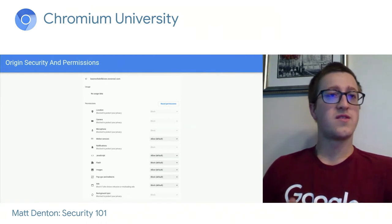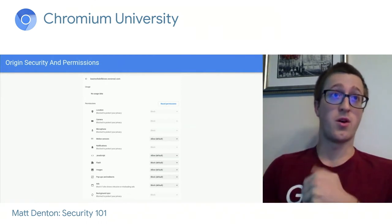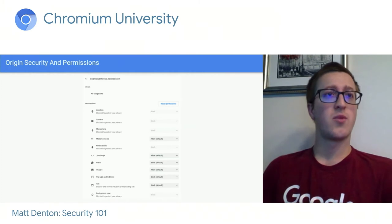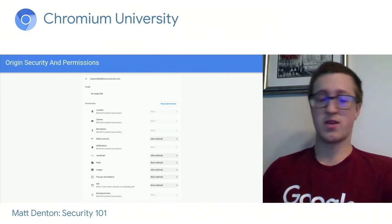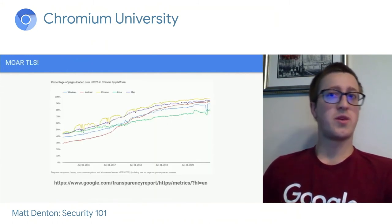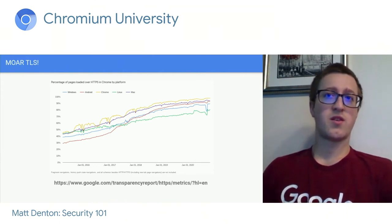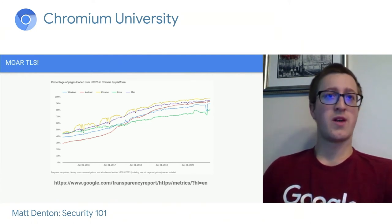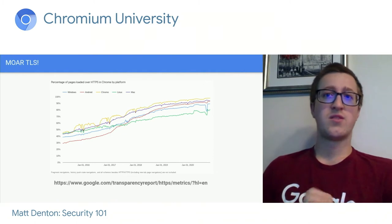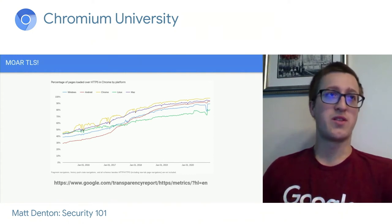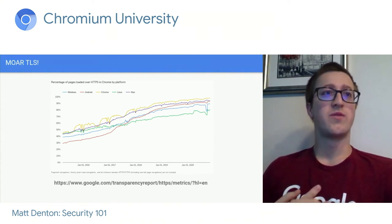You can see this in site settings for neverssl.com, which is always unencrypted HTTP. Most powerful features like location, camera, and microphone are blocked and permanently can't be unblocked. For this reason, Chromium is always intensely invested in the adoption of HTTPS across the web — a large ecosystem-wide project. We've built developer tools, browser UI, and analysis tools to tackle this problem, and usage keeps going up. Back in 2015, less than 50% of pages loaded were over HTTPS, but we've come a long way since then.